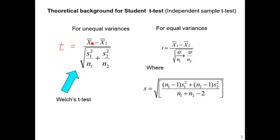The numerator is the average difference — you compare the average total cost in deceased minus the average total cost in survived. That's the numerator. The denominator is the standard error of X1 minus X2.